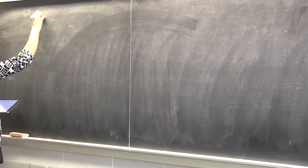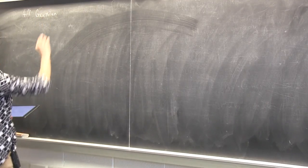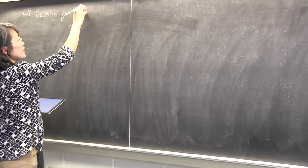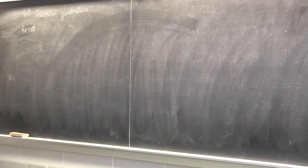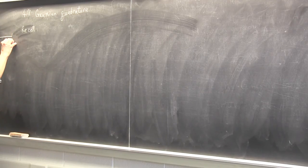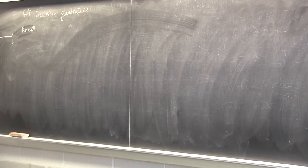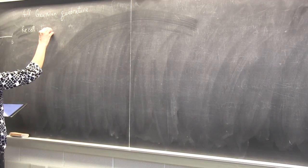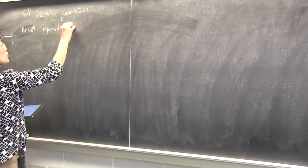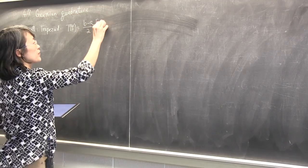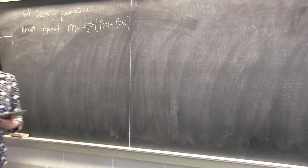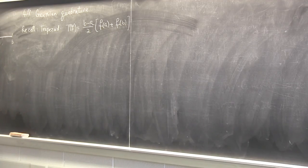We're going to learn some new rules besides trapezoid and Simpson. This is a somewhat different way of thinking — it's due to Gauss. Let's recall what we have done so far: the trapezoid and Simpson's rules. Consider the interval AB as a subinterval. The trapezoid rule for a function f would be (b minus a)/2 times f(a) plus f(b). That's the basic trapezoid rule — a linear interpolation giving the area of the trapezoid.